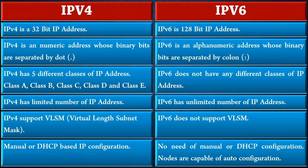IPv4 requires manual or DHCP-based IP configuration, whereas IPv6 does not require any manual or DHCP configuration, as its nodes are capable of auto-configuration.